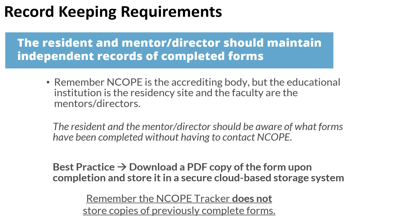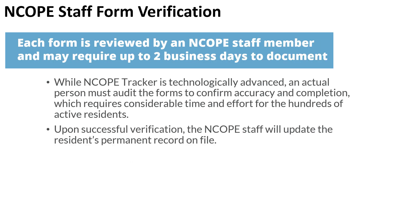If you're a resident trying to get a copy of the evaluation of the resident form filled out by your mentor, those are emailed to you. However, please remember that ENCOPE Tracker does not store copies of previously completed forms. Once forms are completed, the ENCOPE staff will perform a form verification — each form is reviewed by a staff member and may require up to two business days to document. An actual person must audit the form to confirm accuracy and satisfactory completion, given that there are hundreds of active residents at any given time. Upon successful verification, the ENCOPE staff will update the resident's permanent record on file.